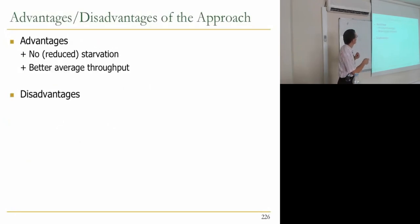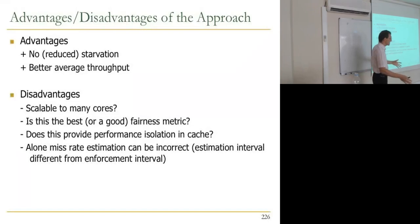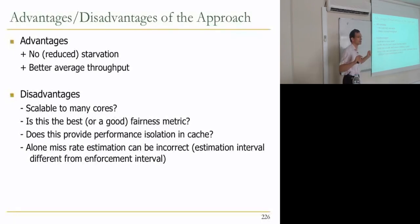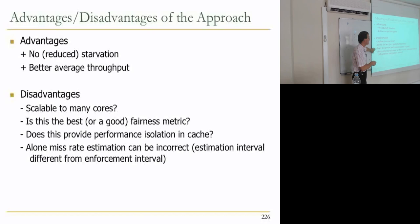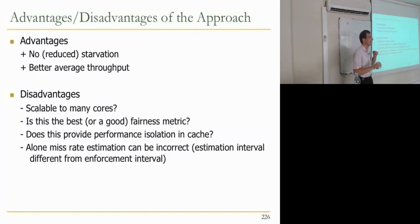Advantages: no starvation and better average throughput. Scalability is hard because of how alone performance is determined — with 32 cores sharing a cache, to get alone performance you'd stop all other cores, causing significant throughput loss. There's always debate about what is a good fairness metric. Many approaches also don't provide performance isolation. Running an application alone in one interval to get alone miss rate can be incorrect since you're comparing it to a different miss rate in a different interval — comparing apples and oranges.